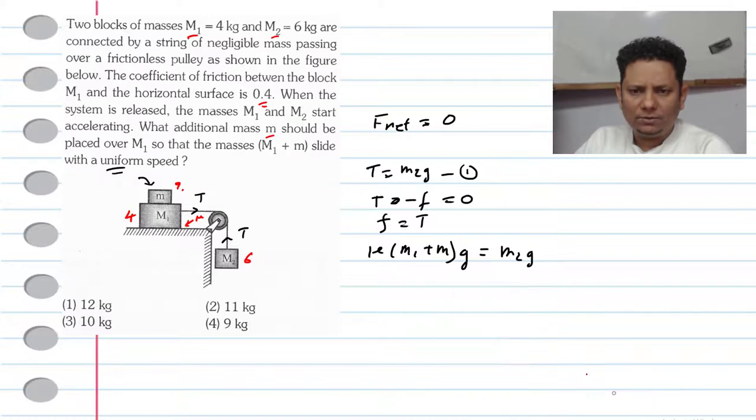Let's substitute the data: 0.4 × (4 + m) = 6. The g cancels. When we multiply: 1.6 + 0.4m = 6.